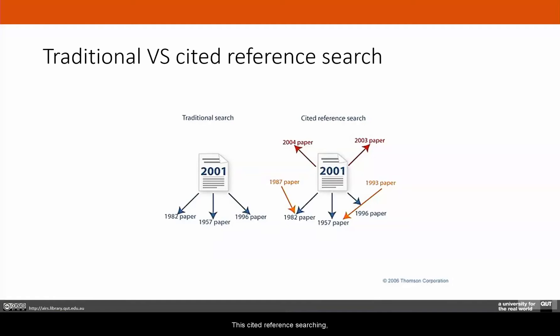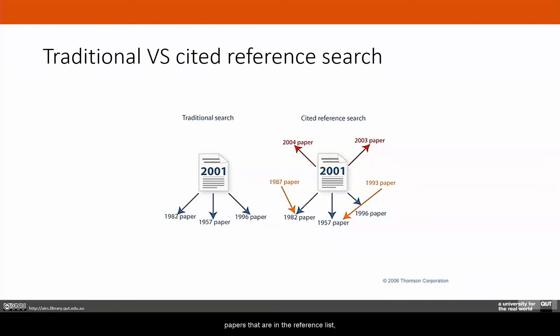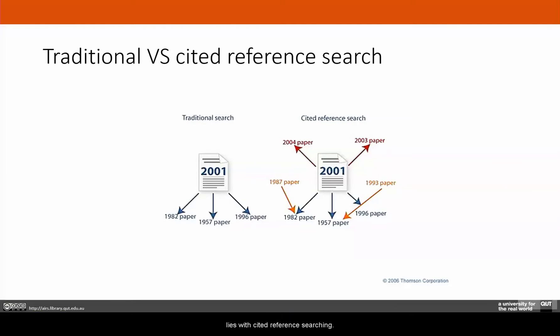With cited reference searching, you find your original paper and the other papers in its reference list, but you'll also find the more recent papers that have cited that particular work. That's where the power lies with cited reference searching.